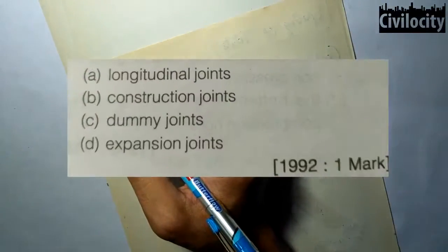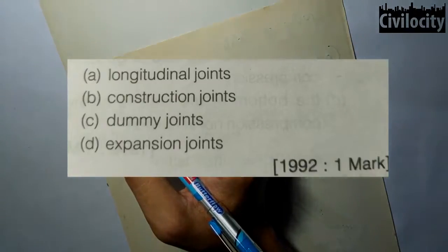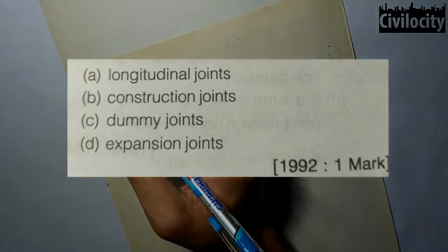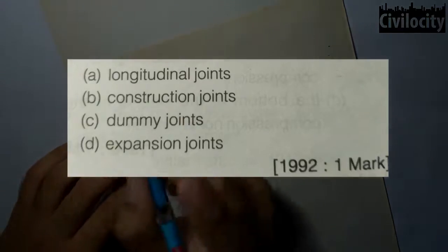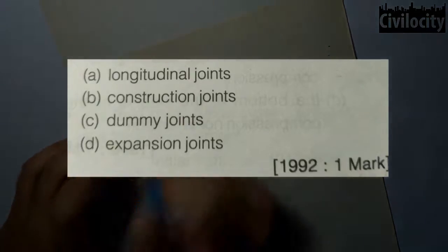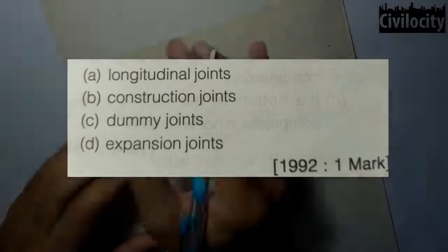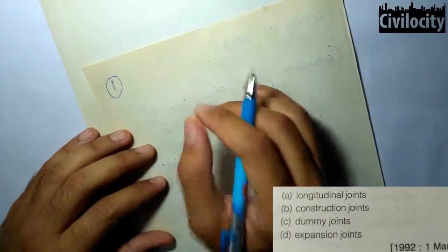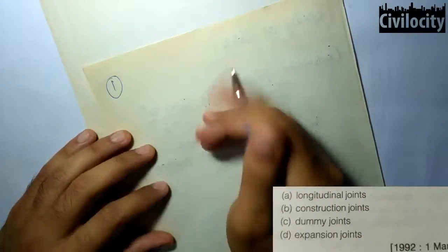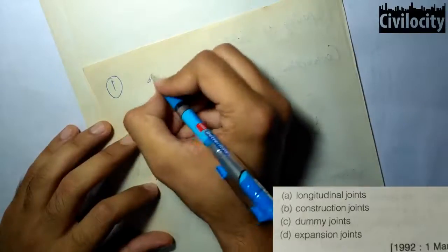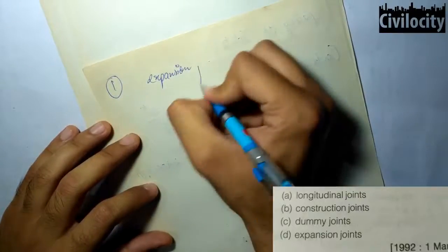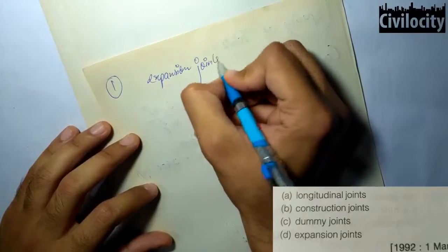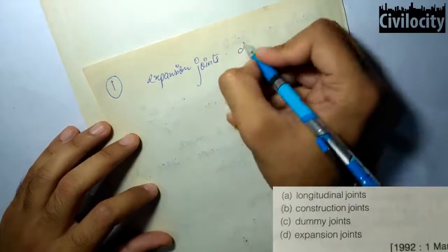The first question says that in a cement concrete pavement, dowel bars are used in which type of joint. In some construction, dowel bars are used in contraction joints, that is dummy joints, but that is not the general case. Generally, they are used in expansion joints. So from the options — longitudinal, construction, dummy, and expansion — you are going to choose expansion joints.